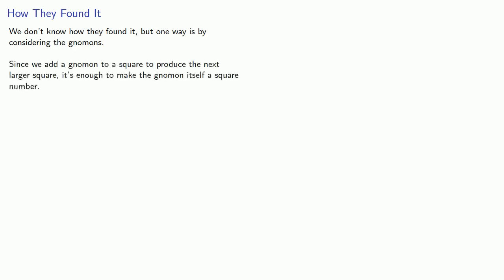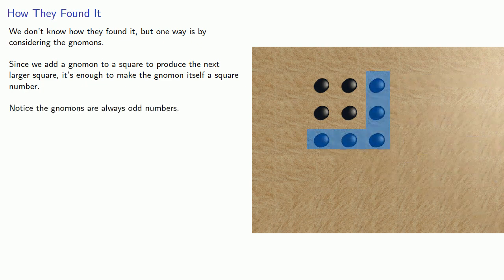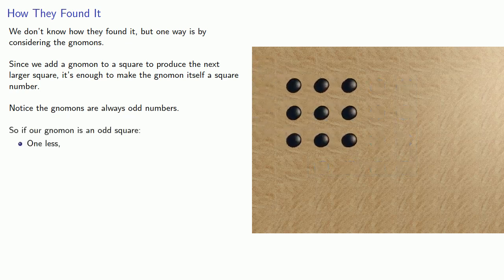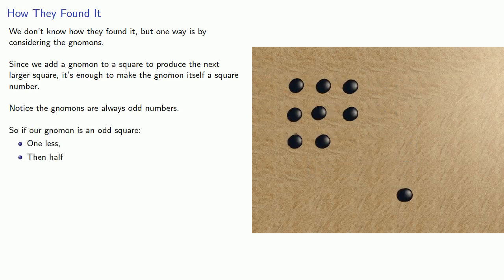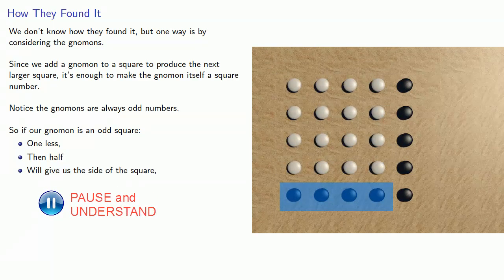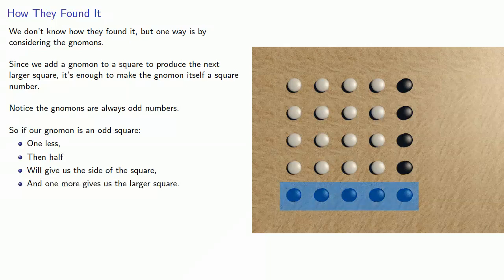So how did the Pythagoreans find this? We don't know. But one way is by considering the gnomons. Since we add a gnomon to a square to produce the next larger square, it's enough to make the gnomon itself a square number. And the thing to notice here is the gnomons are always odd numbers. So if our gnomon is an odd square, one less, then half, will give us the side of the square to gnomon too. And because we're adding the gnomon to produce a larger square, then one more, will give us the side of the larger square.